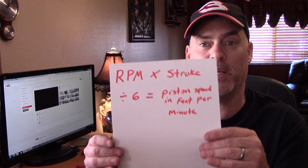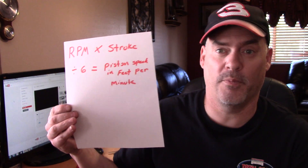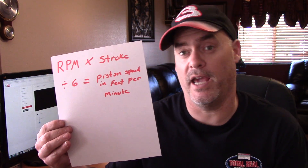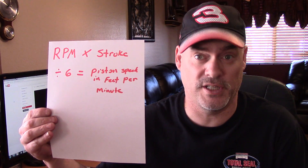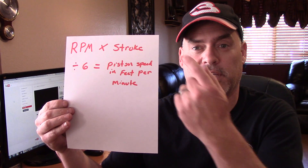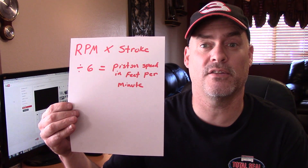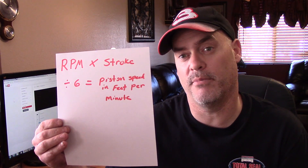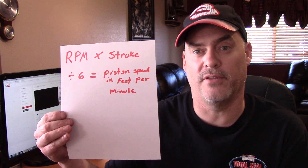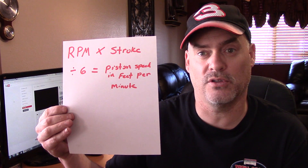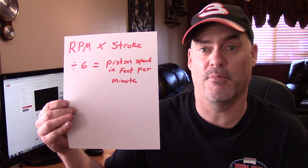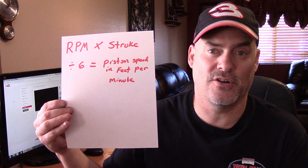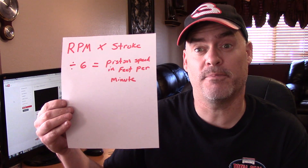The formula we use to calculate piston speed is: take a given RPM — whatever RPM you want to target, say 7,000 RPMs — and multiply it by the length of the stroke. The stroke is how far the piston travels from top dead center to bottom dead center or vice versa. You multiply the target RPM by the stroke length, then divide that number by 6. The answer you get is piston speed in feet per minute.